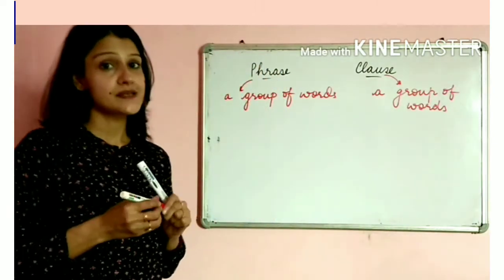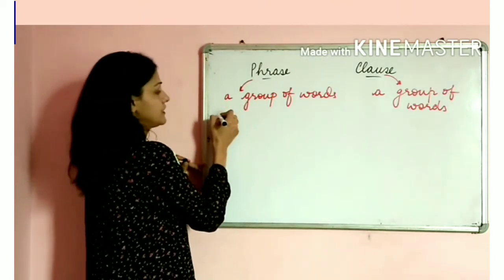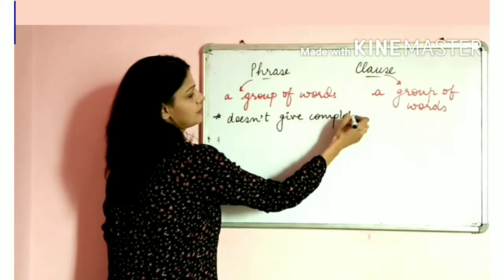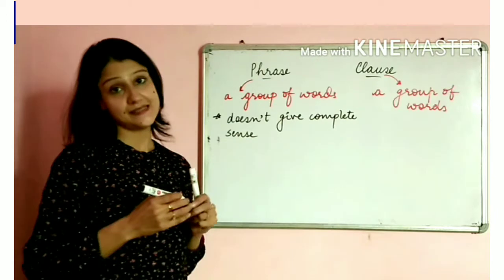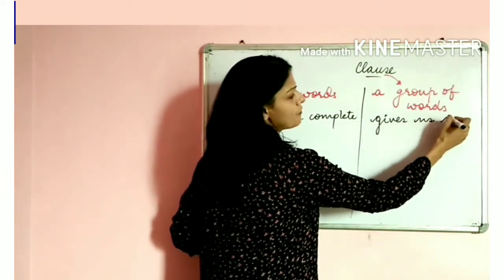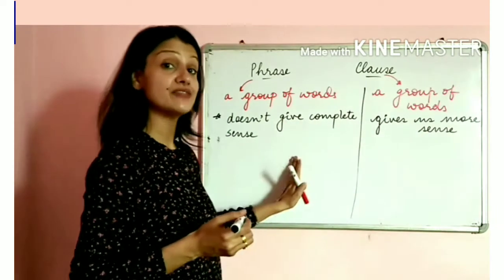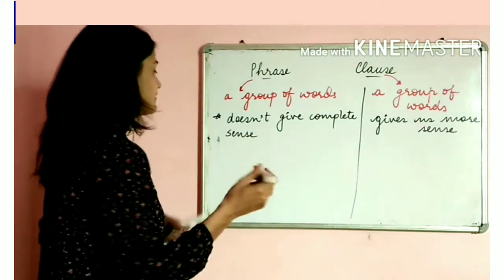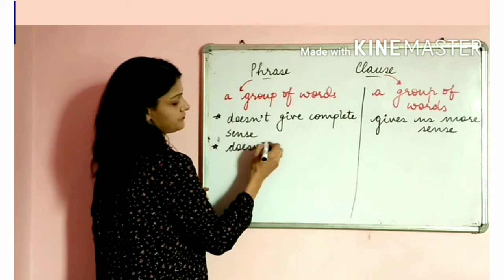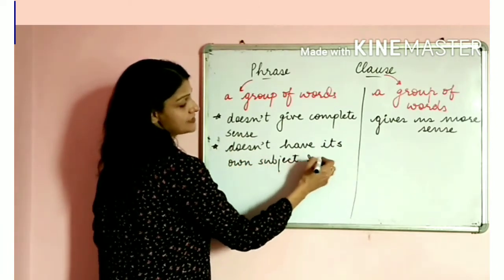The first difference: a phrase is a group of words that does not give complete sense. A clause, on the other hand, gives us more sense than a phrase. The second difference is that a phrase does not have its own subject and predicate.